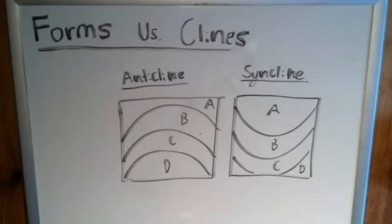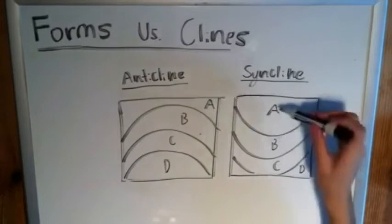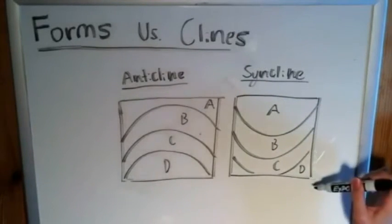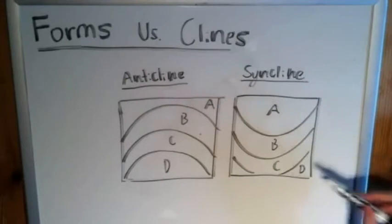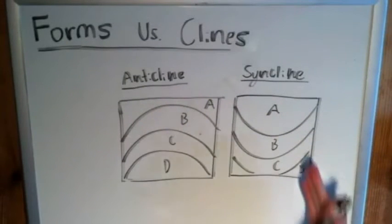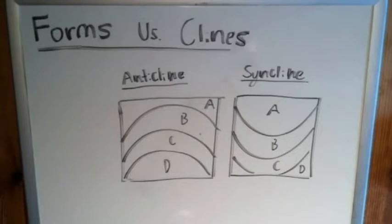Just by using our law of superposition again, A is above B, is above C, is above D. A is the oldest, followed by B, followed by C, followed by D. So it gets progressively younger as you go towards the center of the fold. Easy enough, right?